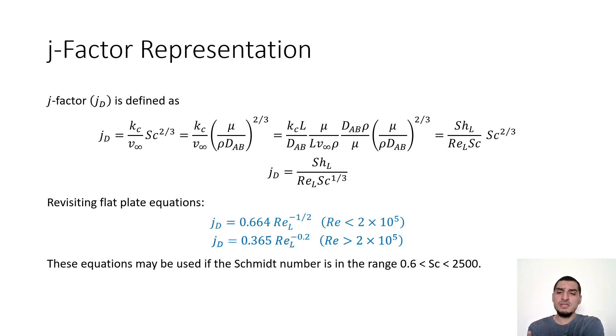You will definitely know that there is something called jh which is also a function of Reynolds number. This is sometimes used because there are some charts that are already available. You can go to the chart using Reynolds number, you can get jh, and then you're done. So this is sometimes an easier way to get the mass transfer coefficient.